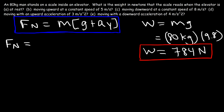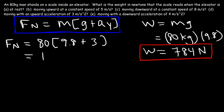For part d, the elevator is moving with an upward acceleration of 3 m/s², so ay = +3. Using N = m(g + ay): that's 80 times (9.8 + 3) = 80 times 12.8 = 1024 newtons. The scale reads a weight greater than the person's natural weight when the elevator is accelerating upward.